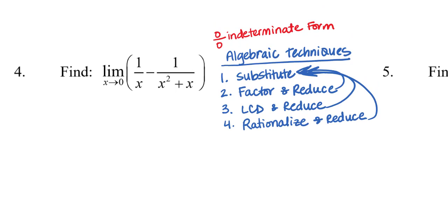Let's start question number four. Rather than writing down the limit laws as they appear in a textbook, I'll just apply these algebraic techniques directly. This is the limit as x approaches zero — not from the left or right specifically, so I must look at both sides — and I have two rational expressions being subtracted. Let's try substituting in zero: the first fraction gives one over zero and the second gives one over zero squared plus zero, both undefined.